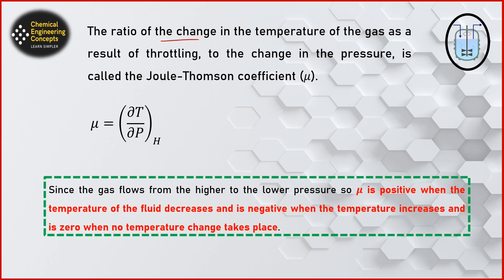The Joule-Thomson coefficient, denoted by μ, is the ratio of the change in temperature of the gas as a result of the throttling process to the change in pressure, and this all happens at constant enthalpy. If I talk about the change in pressure, the pressure goes from a higher value to a lower value, so ΔP will always be negative.